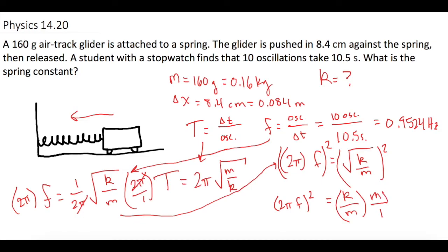The m's cancel and we have the mass times 2πf squared is equal to the spring constant k. Let's write it over here.